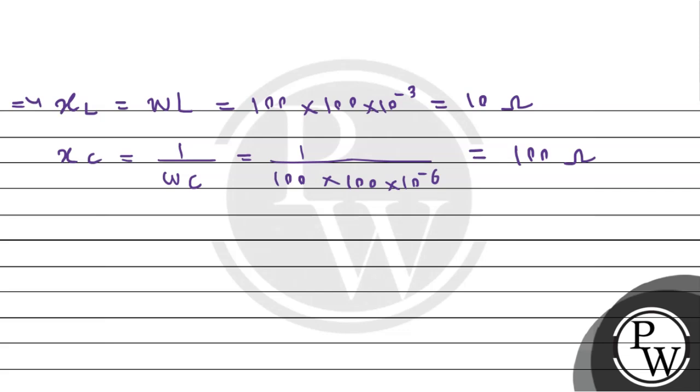Now, by using the formula of impedance, we will calculate the impedance of the circuit. Z will be equals to under root of R square plus XL minus XC whole square.